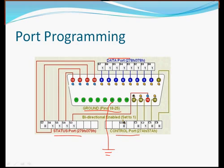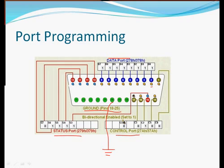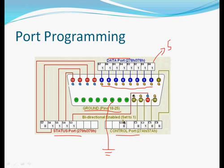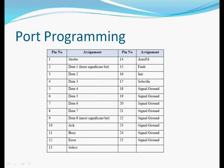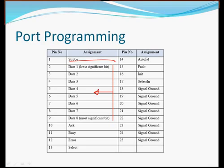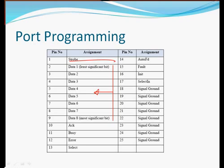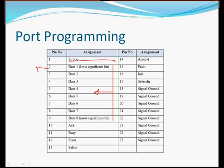The data ports begin from the second pin to the ninth pin, and these pins give a 5-volt output. The address range starts from 0x278 hexadecimal to 0x378 hexadecimal. There are 25 pins in the parallel port: the first one is used to stop, and the next 8 pins are the data pins. These are the pins we are going to use in our programming to give output.